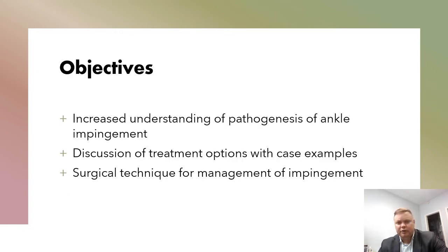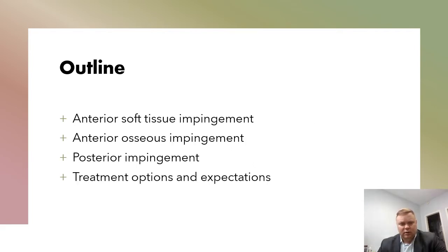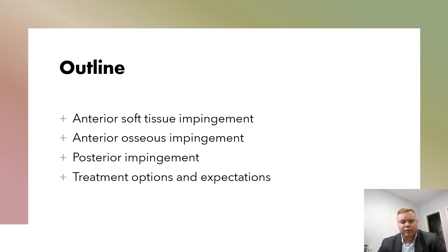Objectives today: we're going to talk about the pathogenesis of ankle impingement, discuss a few case examples, and get into a little bit of surgical technique as well. This does favor arthroscopy as opposed to open procedures; however, anything we do arthroscopically can also be done open if necessary. Impingement is primarily anterior, but posterior impingement can occur in some specific instances. We'll also discuss how we treat this, whether as a primary pathology or secondary to another process.